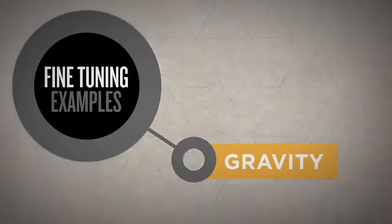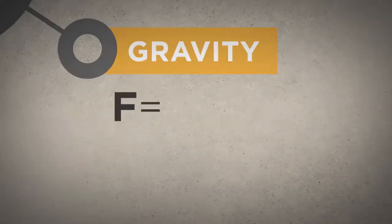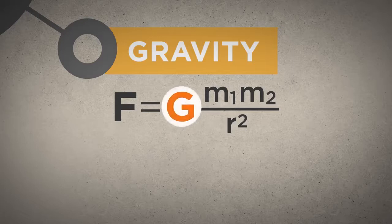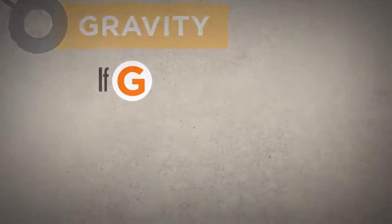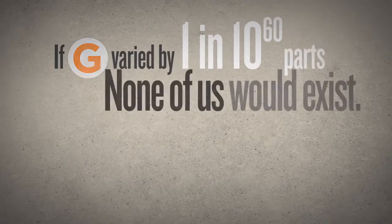Consider gravity, for example. The force of gravity is determined by the gravitational constant. If this constant varied by just 1 in 10 to the 60th parts, none of us would exist.